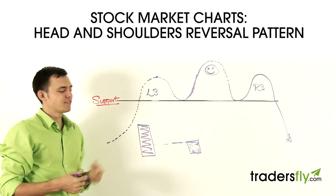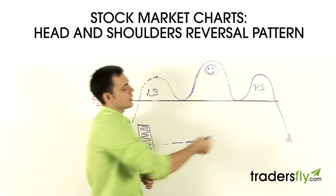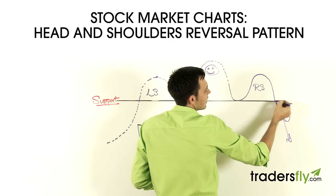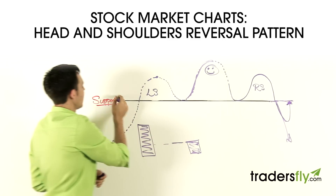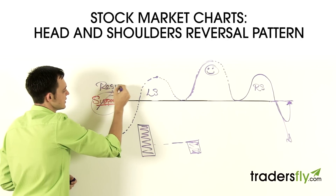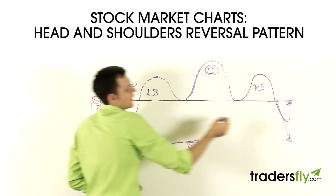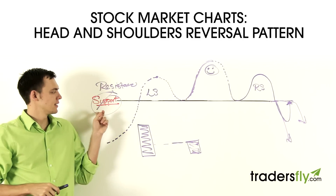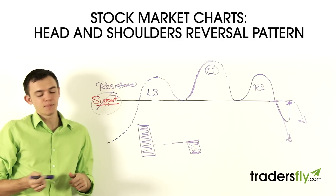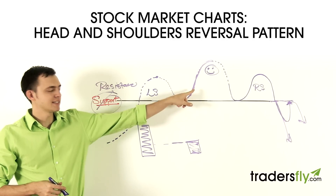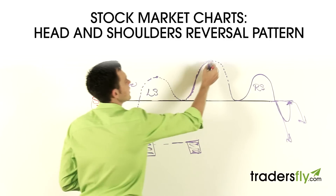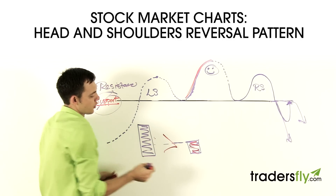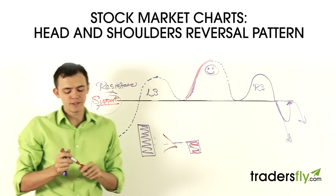Sometimes right after this droopy right shoulder, if it bounces and hits this neckline again, that line has now become — instead of support — resistance at that level. So when it's hitting this and bouncing back down, that's one thing you have to watch out for, because now all of a sudden the support became resistance. And with that weak volume on the head side, this is weak compared to the left shoulder. Less volume on an uptrend — that's no good.